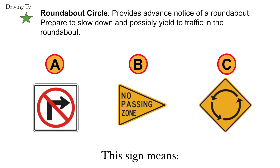Roundabout circle. Provides advanced notice of a roundabout. Prepare to slow down and possibly yield to traffic in the roundabout. The correct answer is C. Roundabout circle.